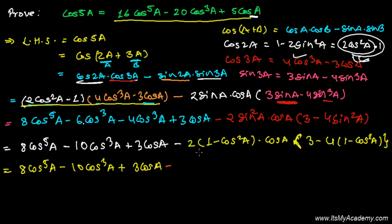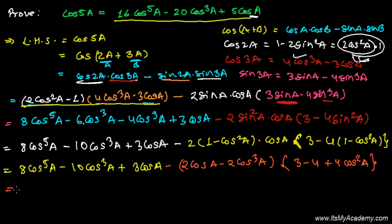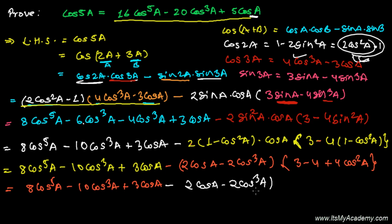When I multiply by 2 first into cos a, I get 2cos a minus 2cos³a. That bracket becomes 3 − 4 + 4cos²a, which is −1 + 4cos²a, or (4cos²a − 1). So we have 8cos⁵a − 10cos³a + 3cos a, minus (2cos a − 2cos³a)(4cos²a − 1).